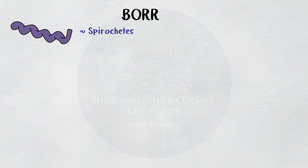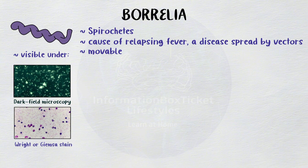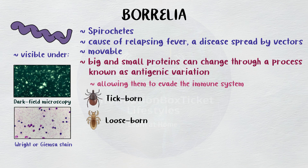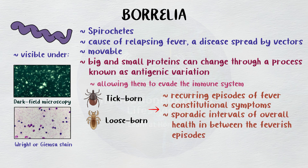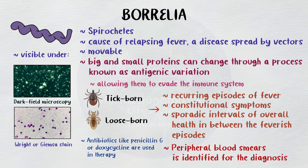To quickly review: spirochetes known as Borrelia species are the cause of relapsing fever, a disease spread by vectors. They are motile and visible under dark-field microscopy and with Wright or Giemsa stain. Their large and small surface proteins can change through a process known as antigenic variation, allowing them to evade the immune system. Both tick and louse-borne relapsing fever are distinguished by recurring episodes of fever and constitutional symptoms, as well as sporadic intervals of overall health in between feverish episodes. Antibiotics like penicillin G or doxycycline are used in therapy once Borrelia in peripheral blood smears is identified for the diagnosis.